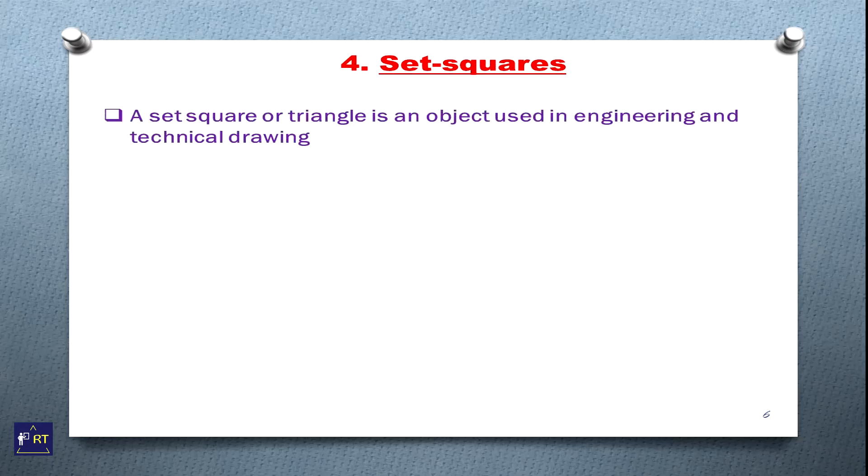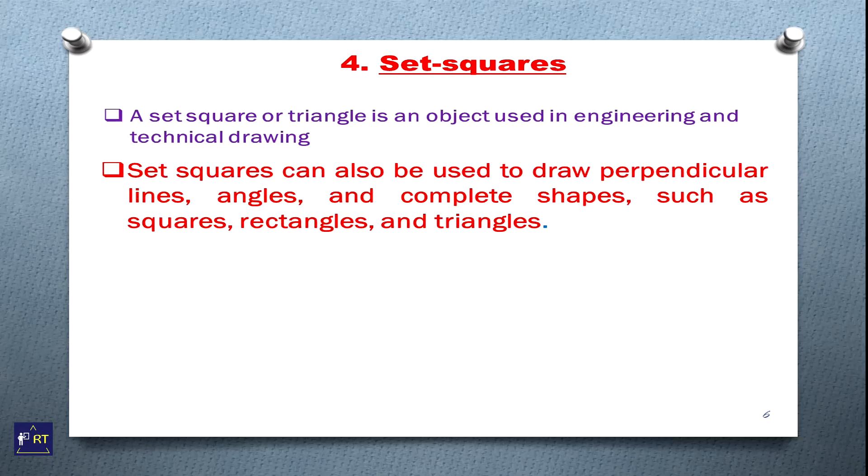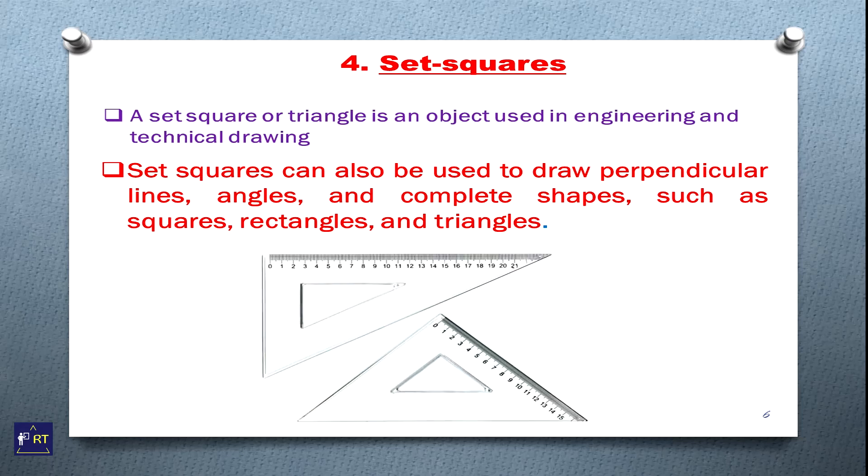Set square. A set square or triangle is an object used in engineering and technical drawing. Set squares can also be used to draw perpendicular lines, angles, and complete shapes such as squares, rectangles, and triangles. This is the image of set square.